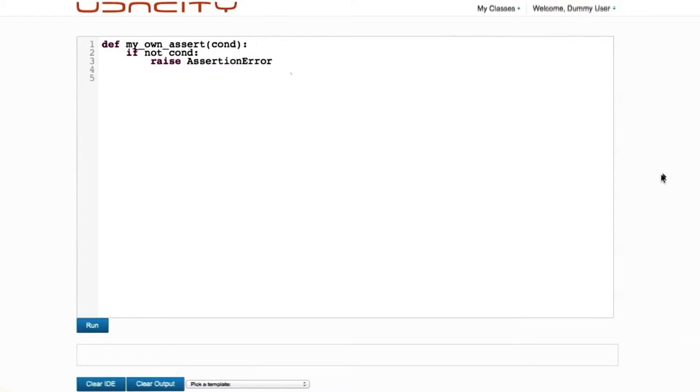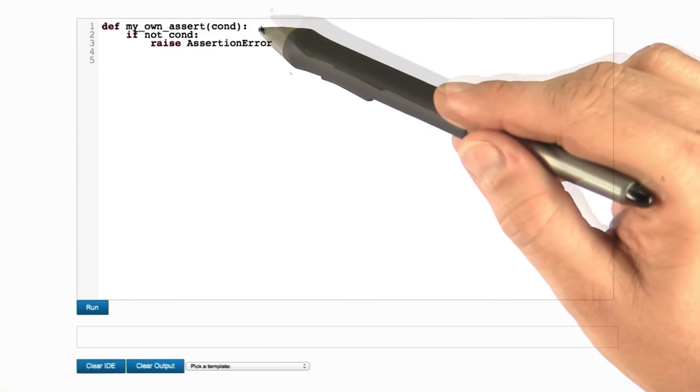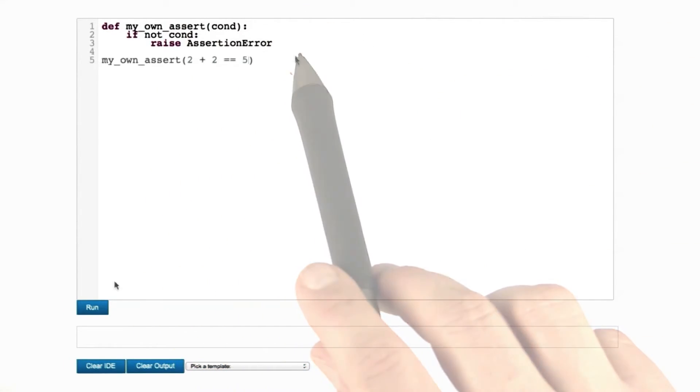In case an assert function would not be available in your language, you could easily roll out your own. I'm coming up with my own assert function, which I call myOwnAssert, takes a condition. If the condition is false, then we raise an assertion error.